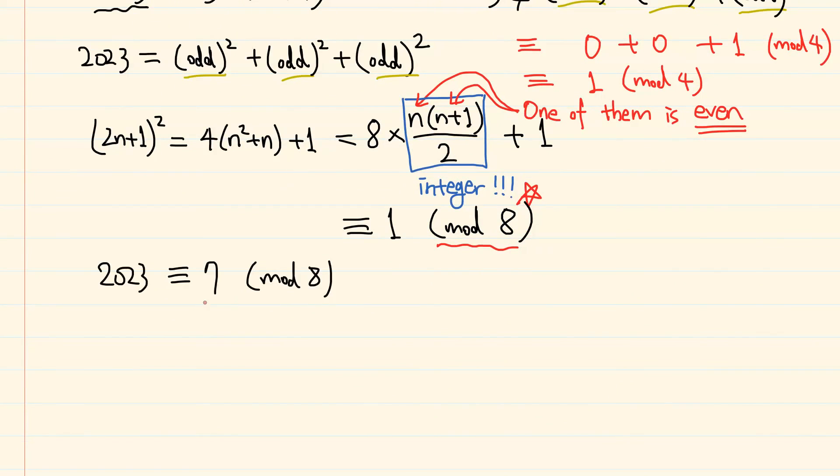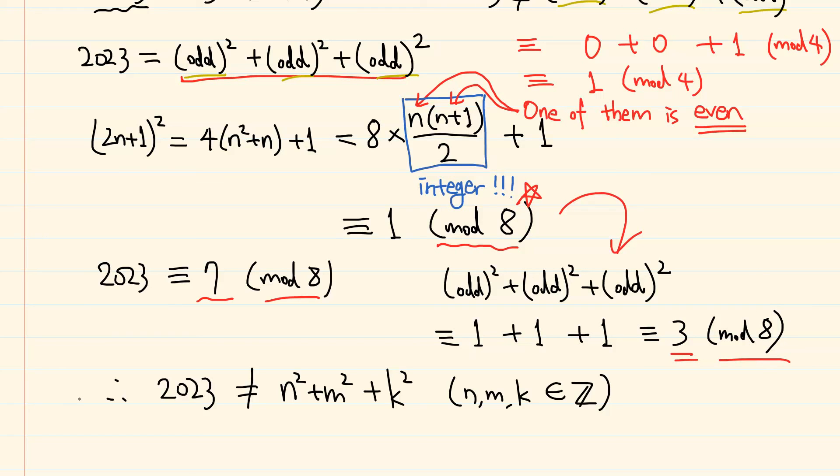Now, 2023 is congruent to 7 modulo 8. But this sum of squares of 3 odd numbers is only congruent to 3 modulo 8. Therefore, we can conclude that 2023 cannot be expressed as the sum of 3 squares. And that's all for this video.